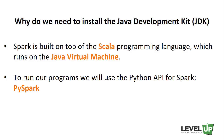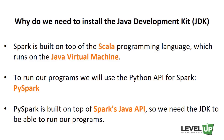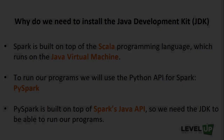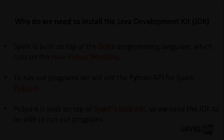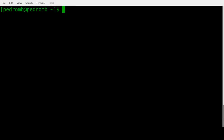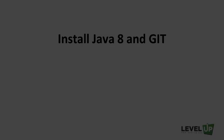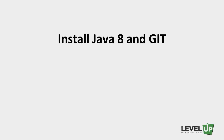First, let's check if Java is installed on your laptop. Launch a command line terminal and type java -version. If you already have Java installed, this command will print out which version is currently being used. If you don't have Java installed or your version is older than 8, let's install it. If you already have the desired Java version, you can skip this installation step.